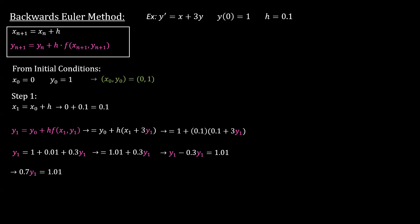0.7y1 equals 1.01. Now you can see already what we're going to do. We want to solve for y1, so we divide by 0.7. We get y1 equals 1.01 over 0.7. When you do this calculation, we get that y1 equals 1.443, and this is basically our result.